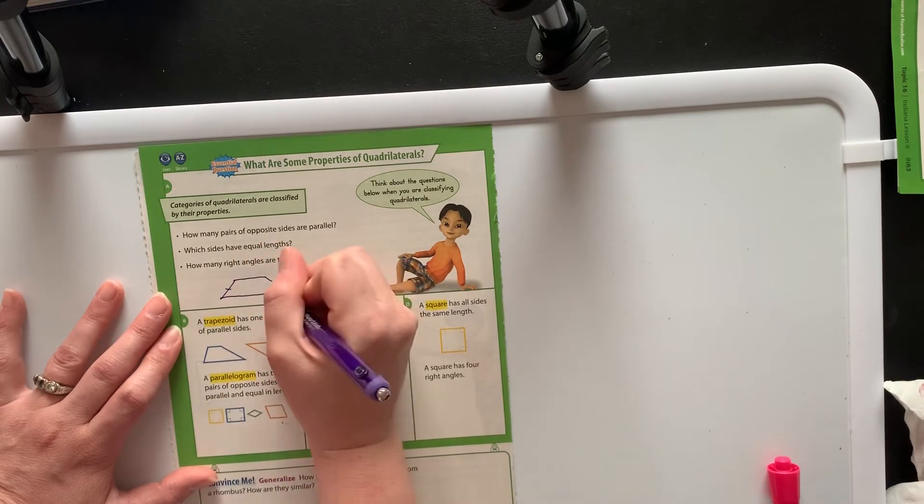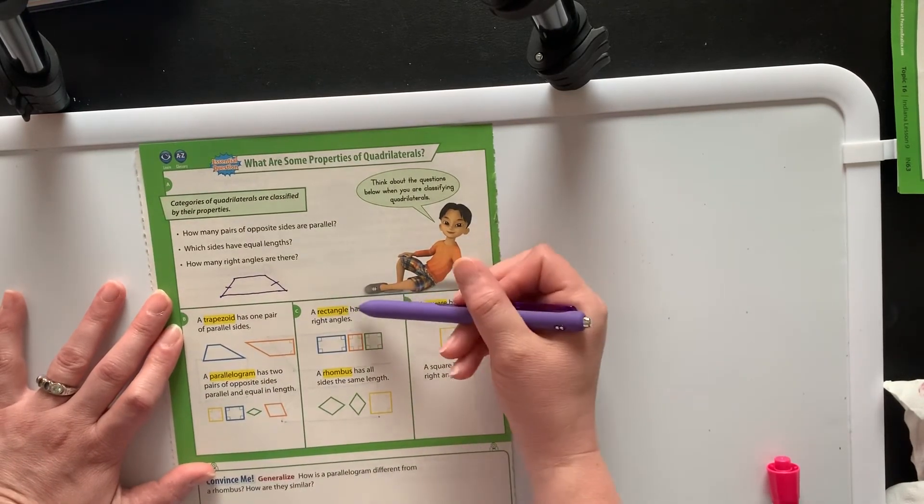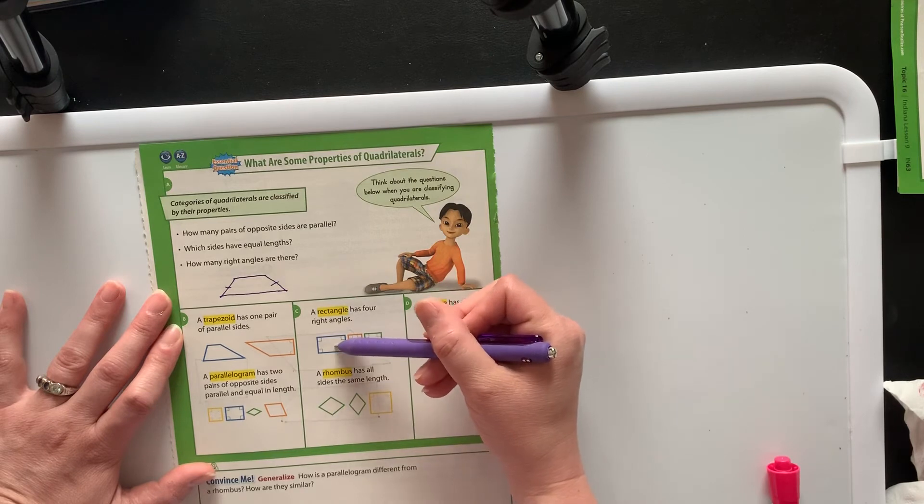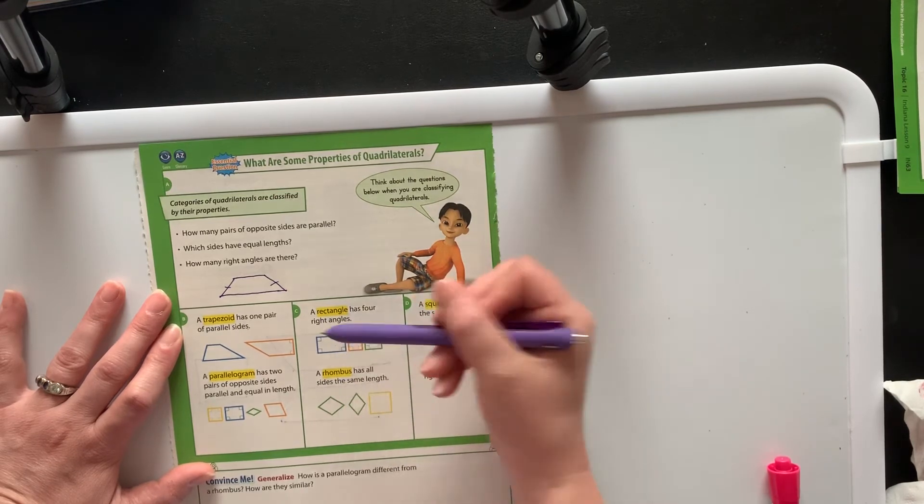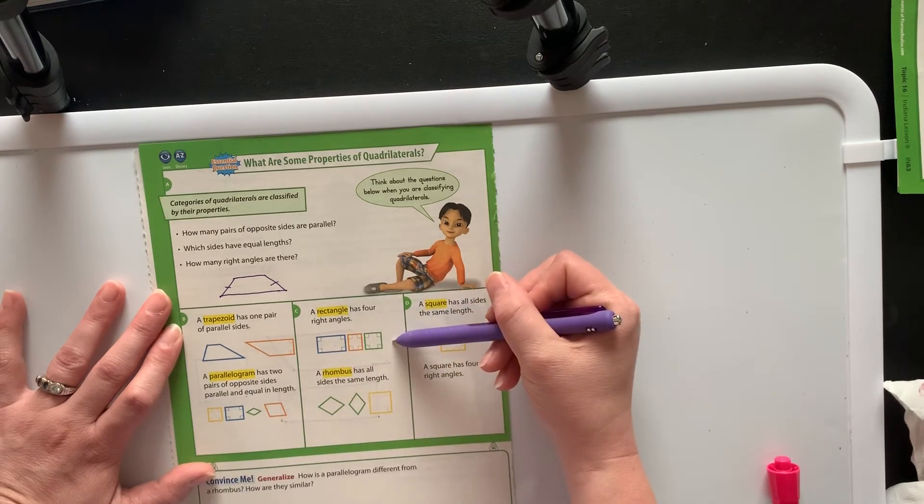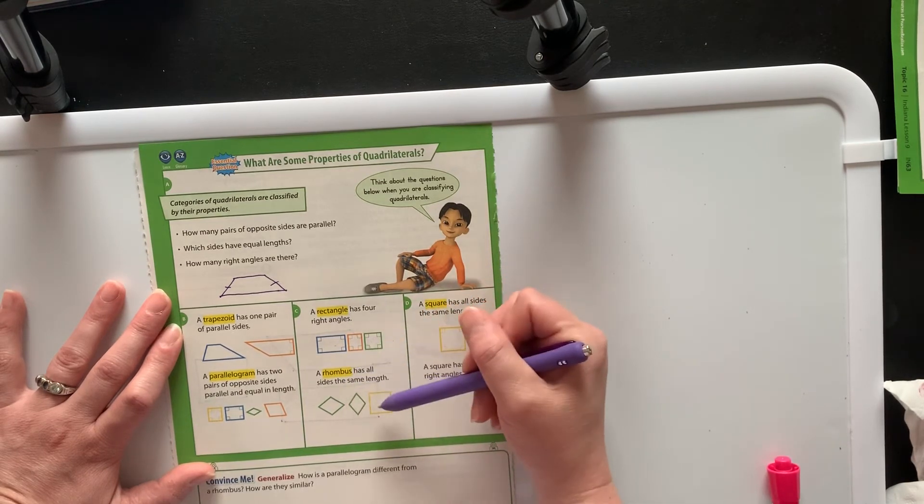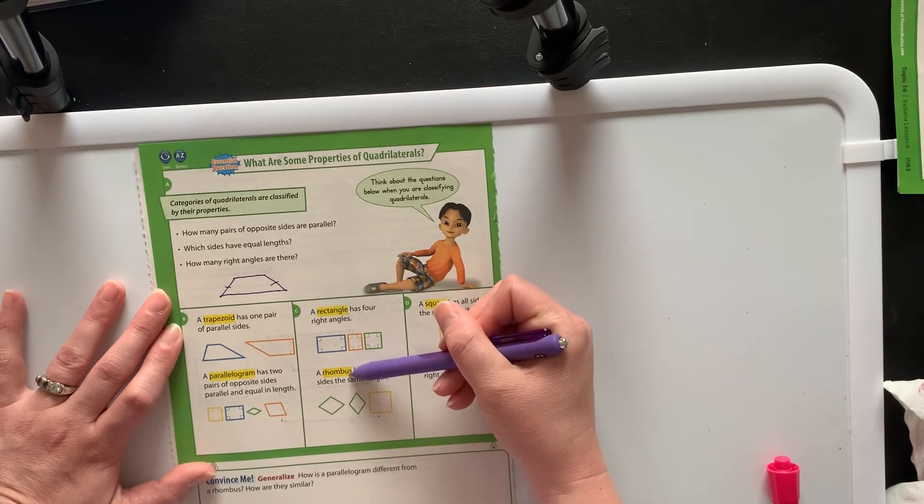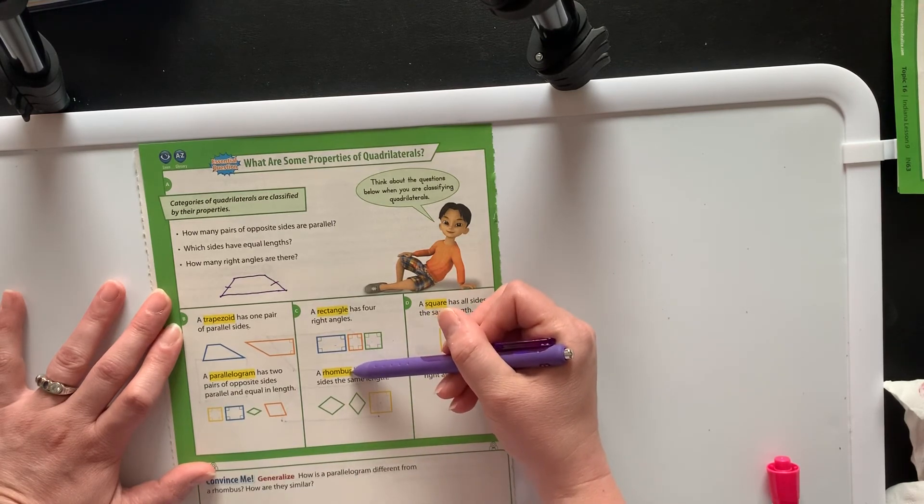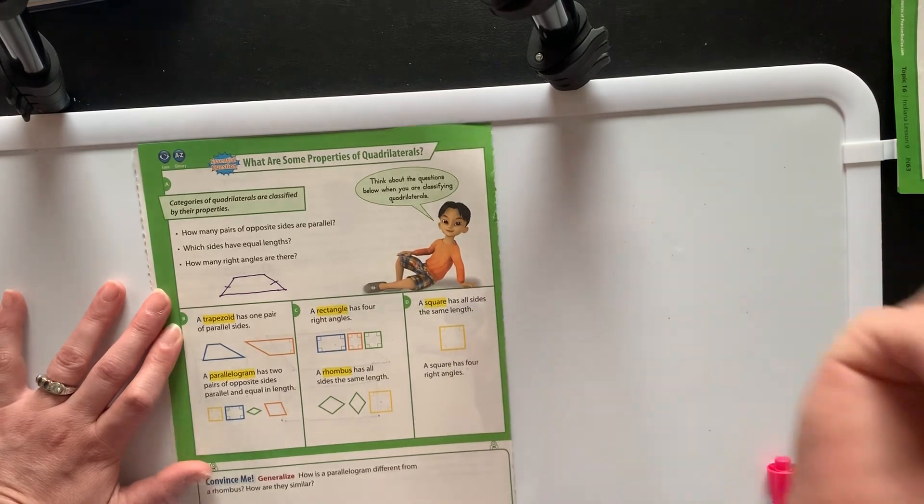These two sides are the same length. That's kind of the classic trapezoid like the trapezoid tables that we have at school. Rectangle has four right angles. All squares are rectangles but not all rectangles are squares. And the rhombus has all sides the same length. Again, all squares are rhombuses but not all rhombuses are squares. And then square has all sides the same length and four right angles.